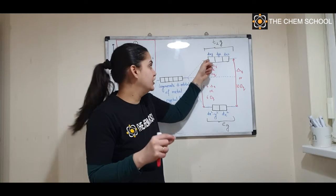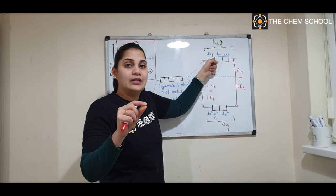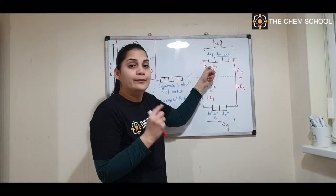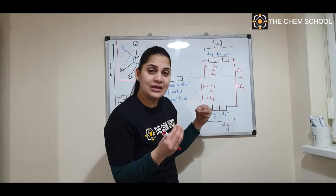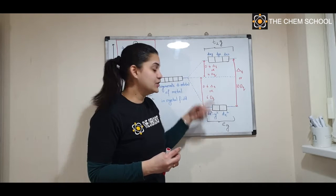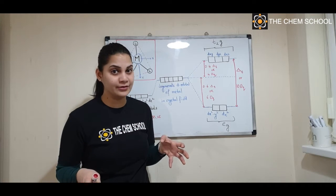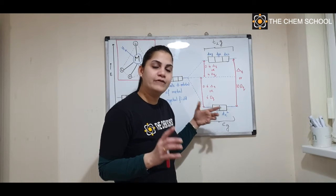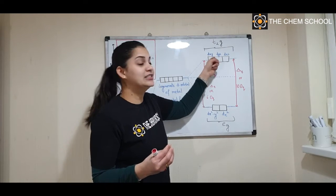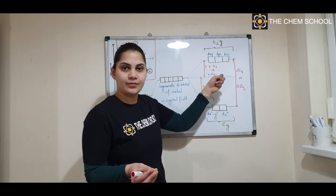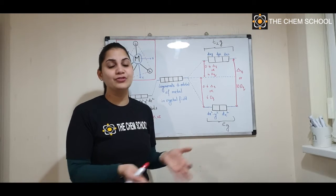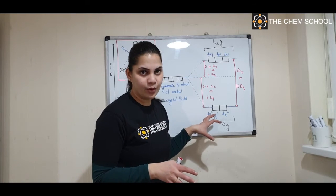Each electron entering the eg orbital will decrease the stability by 0.4 delta t, or 4 dq. Each electron entering t2g will increase the stability by 0.6 delta t, or 6 dq. These values are used for calculating the CFSE — crystal field stabilization energy. By calculating CFSE, we can predict which complex is more stable. So remember these numbers carefully.